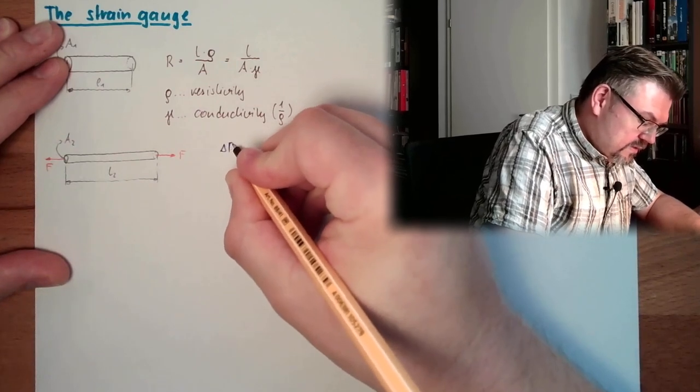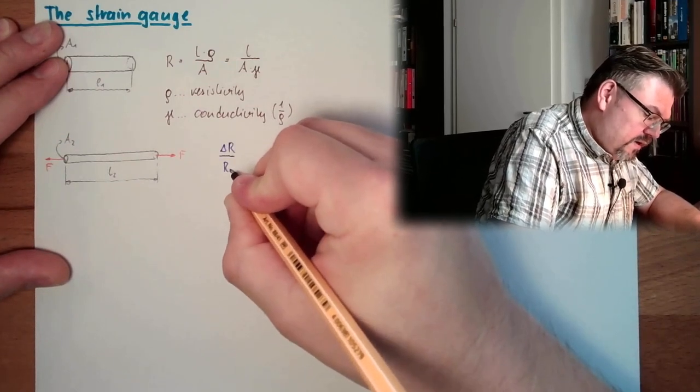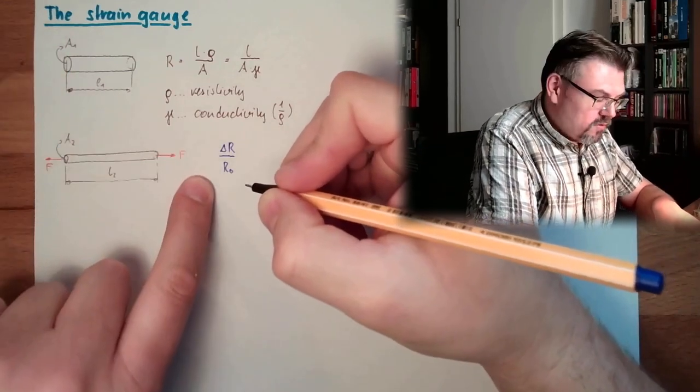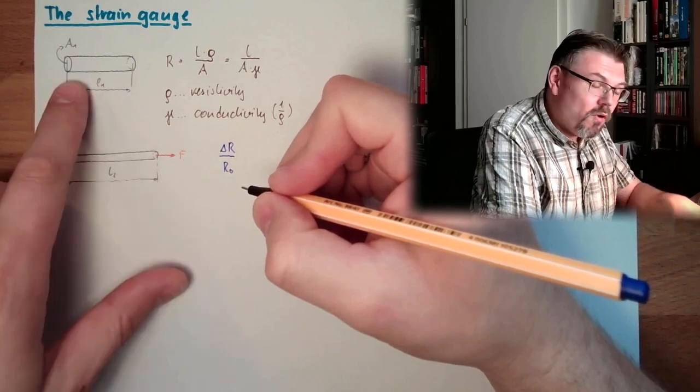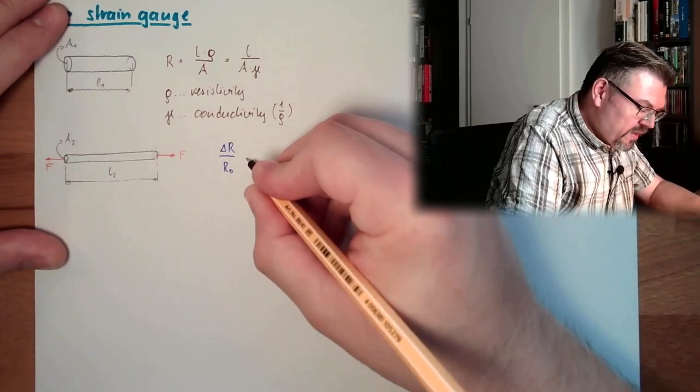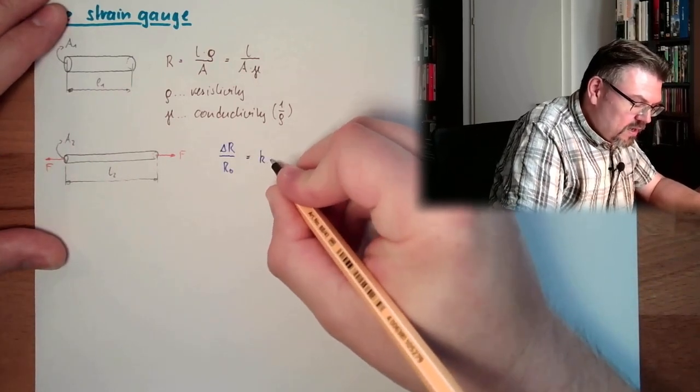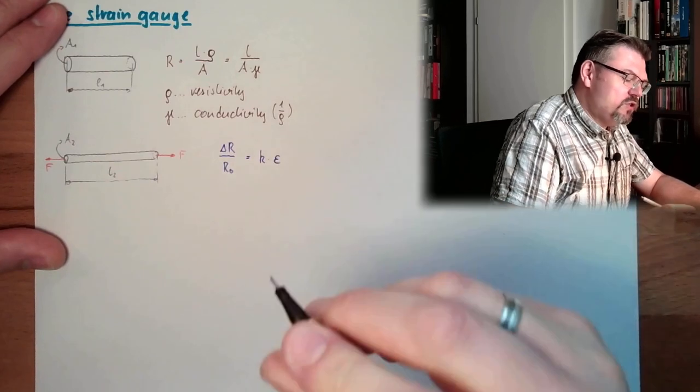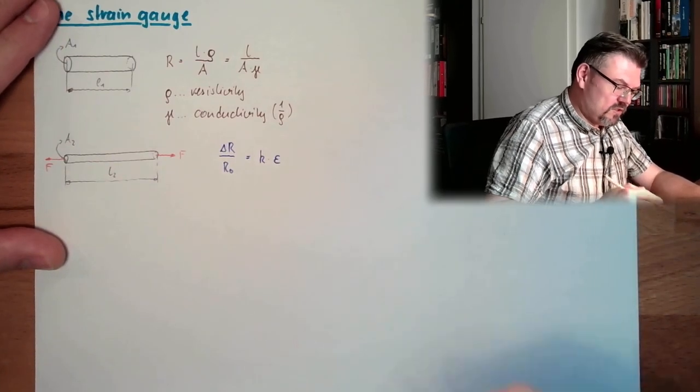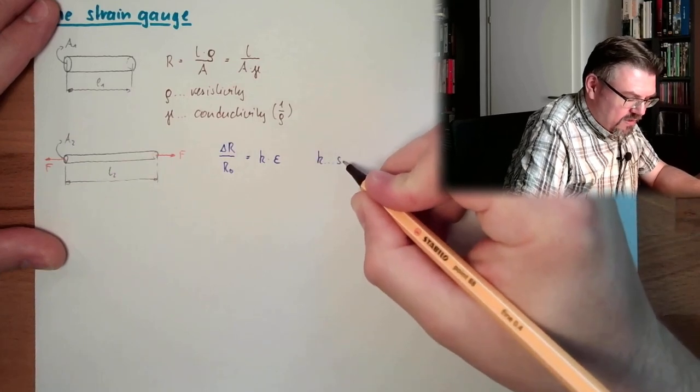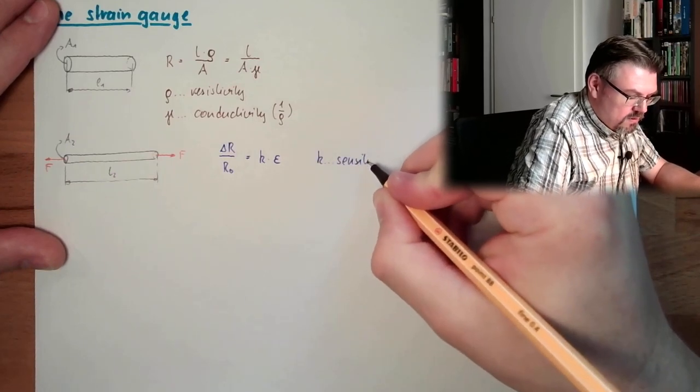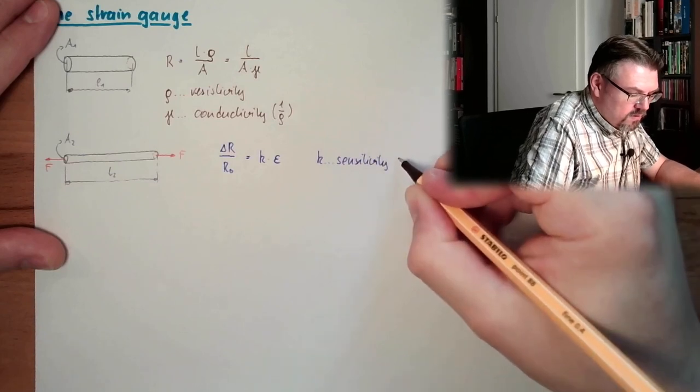This is the resistance change divided by R0. R0 is the original resistance this thing had before applying the force. And this is some constant multiplied by the strain. This K.